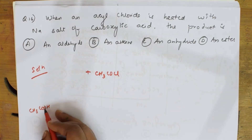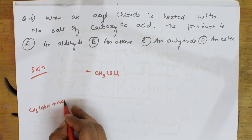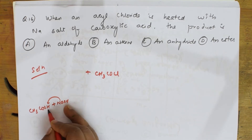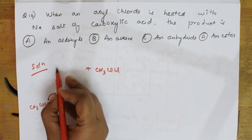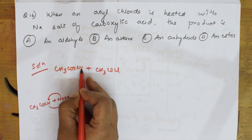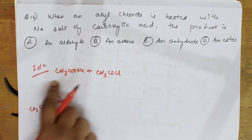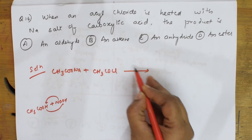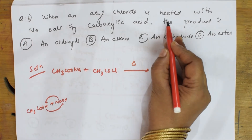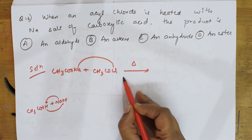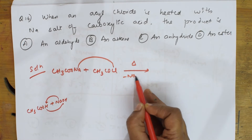Now, acetic acid — what do they do? They introduced sodium using NaOH. Na replaces the hydrogen and water comes out. So what is this one? The sodium salt of carboxylic acid is this. Now these two are heated together, and NaCl comes out.